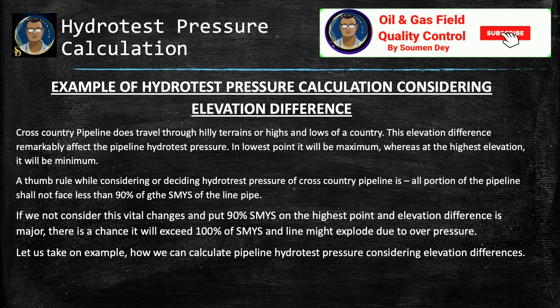Another important consideration for pipeline hydro test is the elevation difference. Construction pipelines travel through hilly terrains with highs and lows. The elevation difference remarkably affects pipeline hydro test pressure — at the lowest point it will be maximum, and at the highest elevation it will be minimum. A thumb rule: all portions of the pipeline shall not face less than 90% of SMYS of the line pipe. If the elevation difference is major and we put 90% SMYS at the highest point, there is a chance it will exceed 100% SMYS and the line might rupture due to over-pressure.